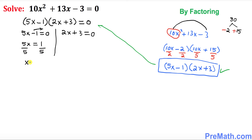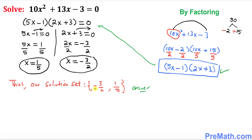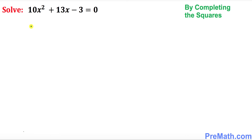So x = 1/5 is one solution. For the second equation, bring the 3 to the other side to get 2x = −3, then divide both sides by 2, so x = −3/2 is the other solution. Thus our solution set is {−3/2, 1/5}.